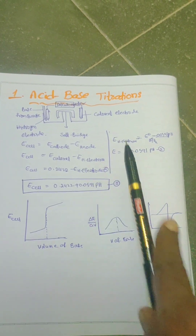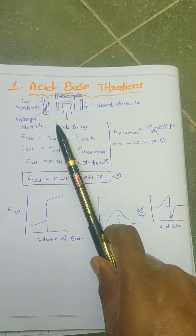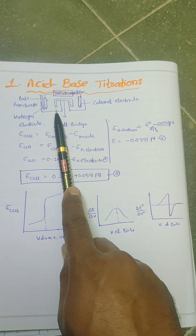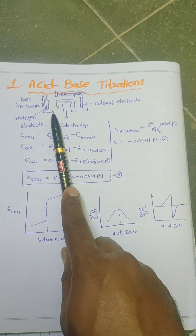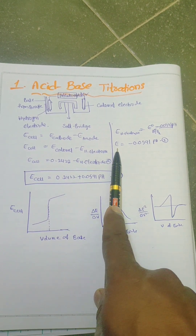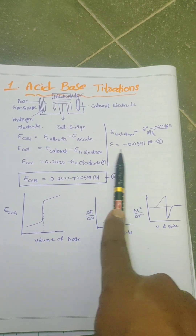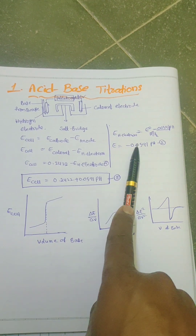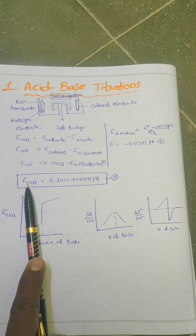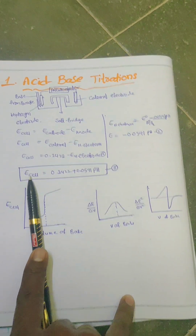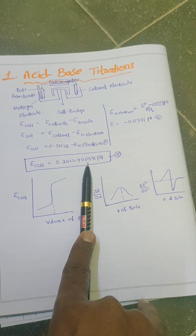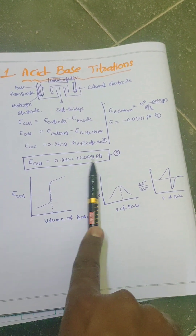The concentration of H⁺ ions decides the pH. The electrode potential of the hydrogen electrode can be written in terms of pH. Combining equations 1 and 2 we get equation 3 — the potential of the cell: E cell = 0.2422 + 0.0591 × pH.